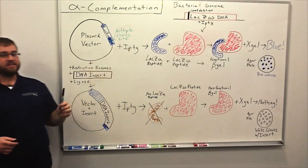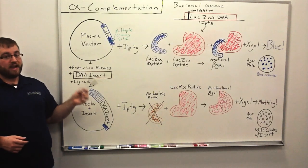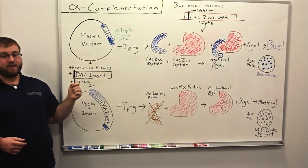The omega peptide sequence remains in the genome of the E. coli cell, where the alpha peptide is placed into a plasmid vector.